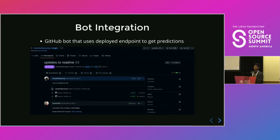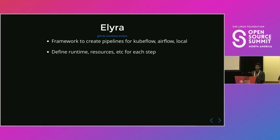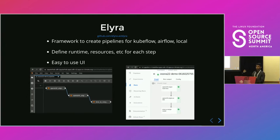So far we've shown what this logical pipeline looks like on an abstract level but haven't talked about how to actually implement this entire workflow. To do that, we use a tool called Elyra. Elyra is a framework that lets you create pipelines you can deploy on Kubeflow or Airflow, or run locally. Each step in this pipeline or DAG is a Jupyter Notebook or Python script, so it integrates really well with your data science working environment. For each step you can define the runtime image, resources, and so on. Elyra provides a UI to create the DAG and deploy it to run as a pipeline on a Kubeflow instance.